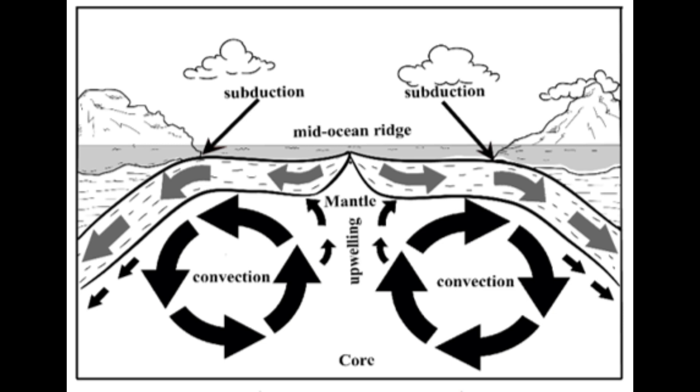Convection current is relevant to the movement of the tectonic plates because the heat builds up pressure underneath the crust or the tectonic plates. As they become unstable, they push against each other and rise upwards or one goes under the other.